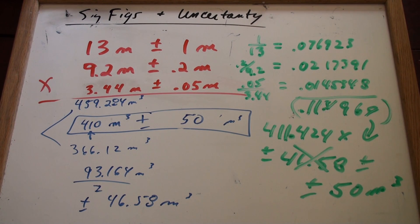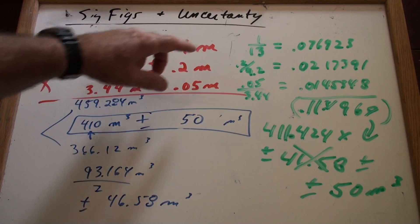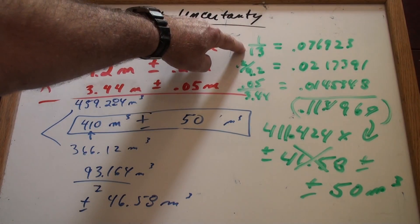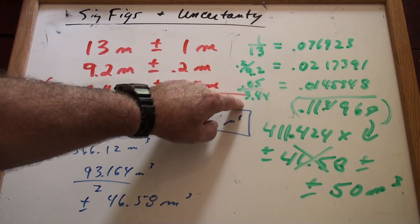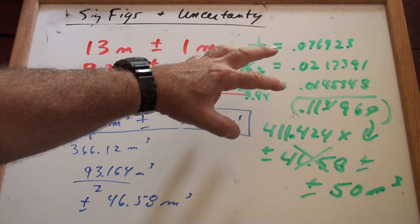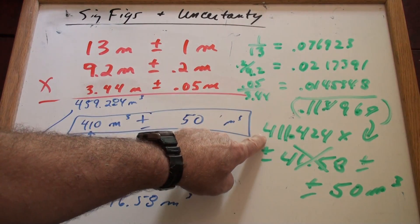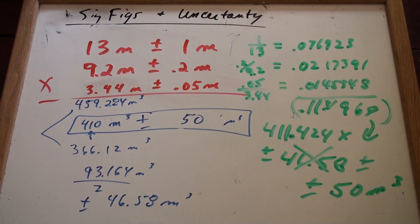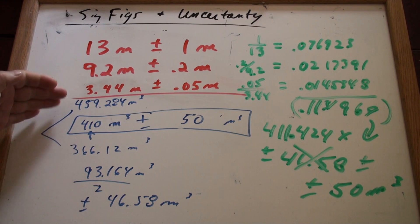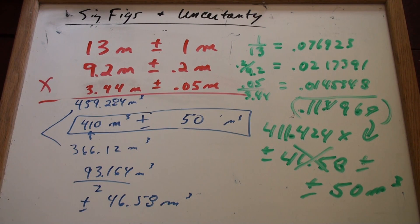I prefer percent uncertainty because with a calculator, if you have one in your hand, you could just do 1 divided by 13 plus 0.2 divided by 9.2 plus 0.05 divided by 3.4 equals, and then multiply it by the actual volume, and then you automatically get the uncertainty. Real quick, boom, boom, boom, right through your calculator. The high-low seems to take some time, but it kind of makes more sense. So I wanted to show you both techniques. Folks,